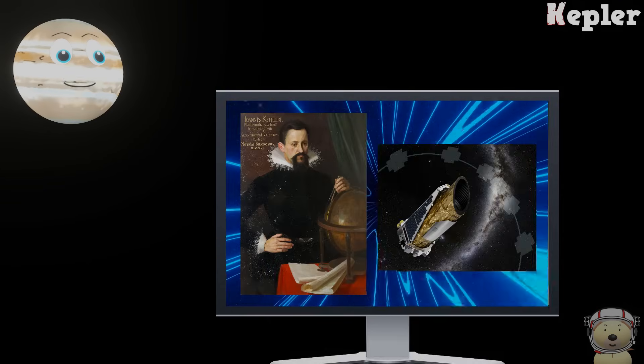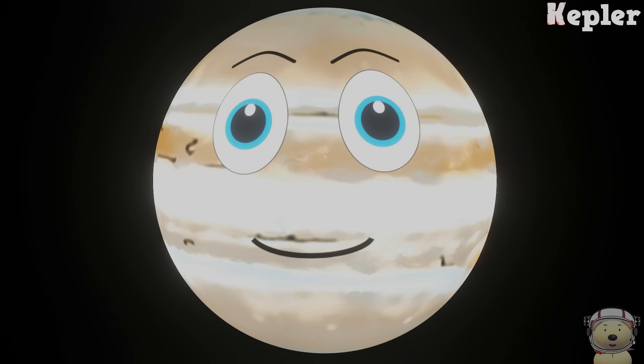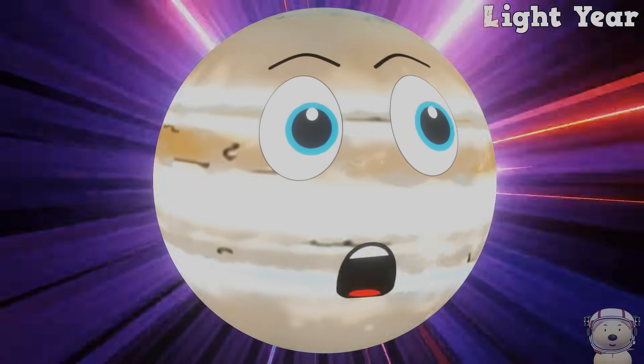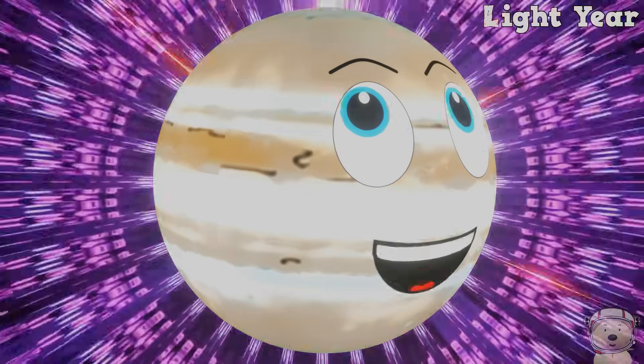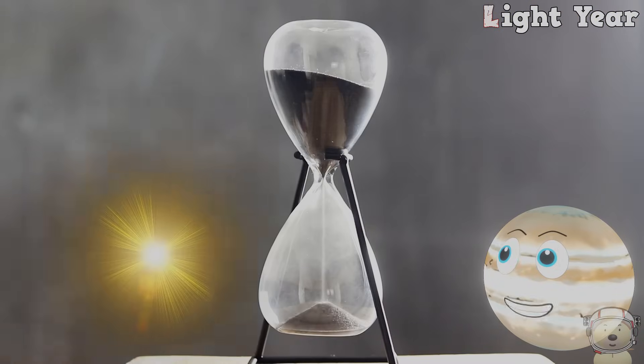K is for Kepler, a brilliant man, important astronomer, a man with a plan. L is for light year, how fast light can go over a year, look at it, whoa!